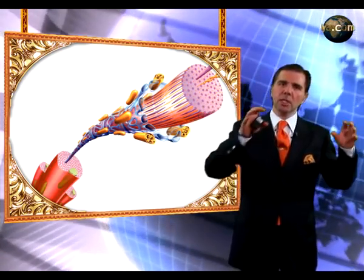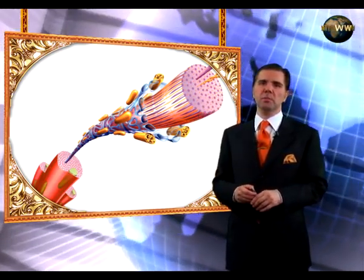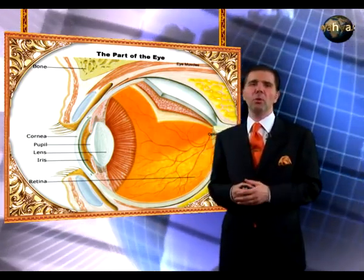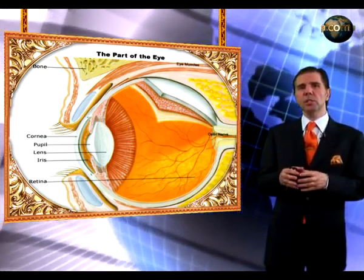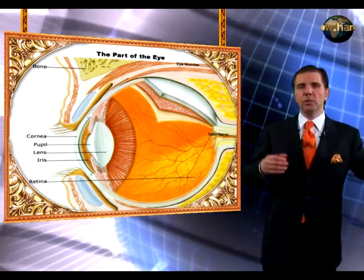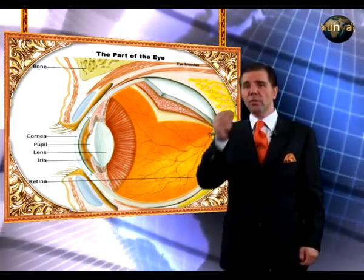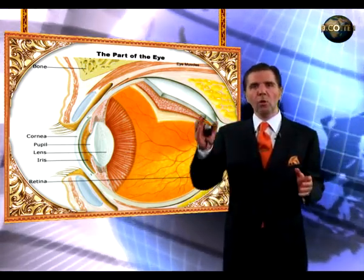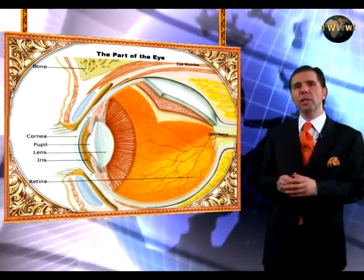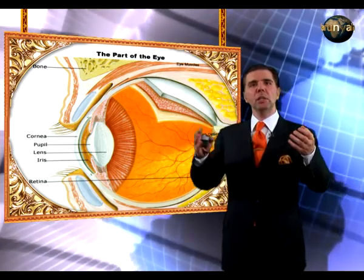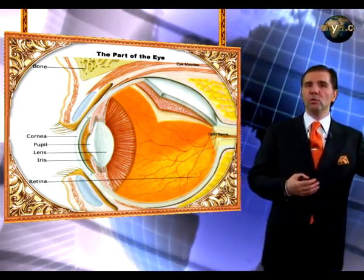Take the human eye as one example. The human eye is extremely complex — it is better than any camera in the world and consists of about 40 different components. If any one of these components is either missing or defective, it will not function. If the lens is missing, it will not function. If the cornea is missing, it will not function. If the lacrimation glands are missing, it will not function. If there are no eyelids, it will not function. All these components have to be present at the same time and in the same place for an eye to function. This shows us that the human eye is irreducibly complex, which falsifies the theory of evolution as Charles Darwin said.